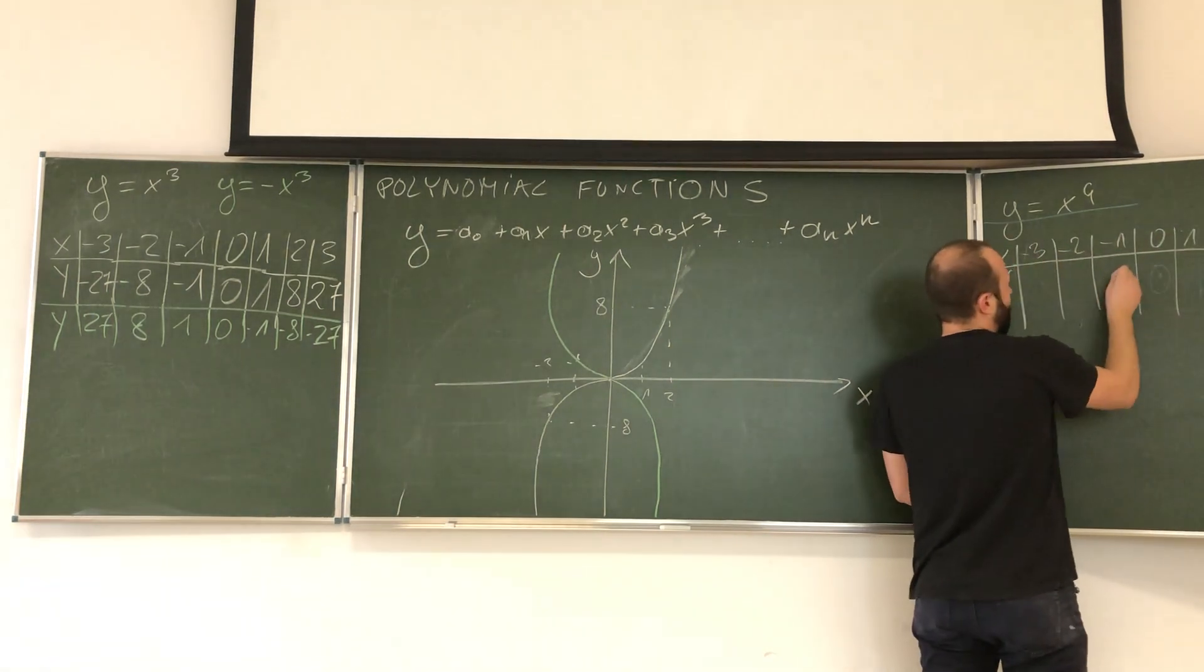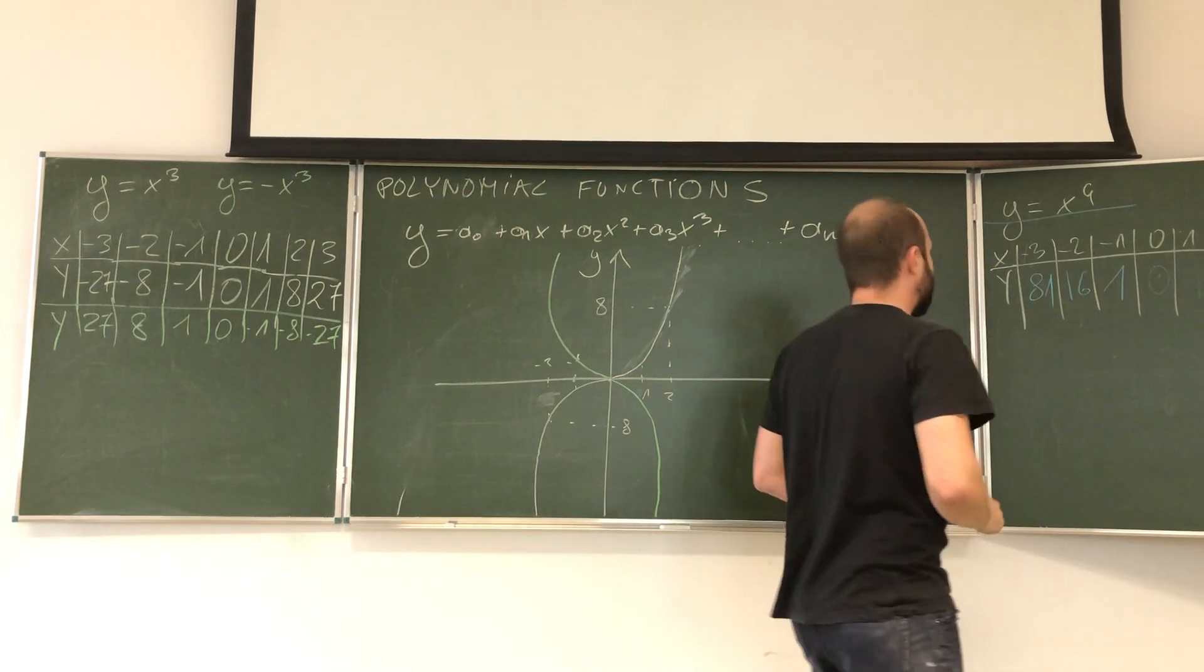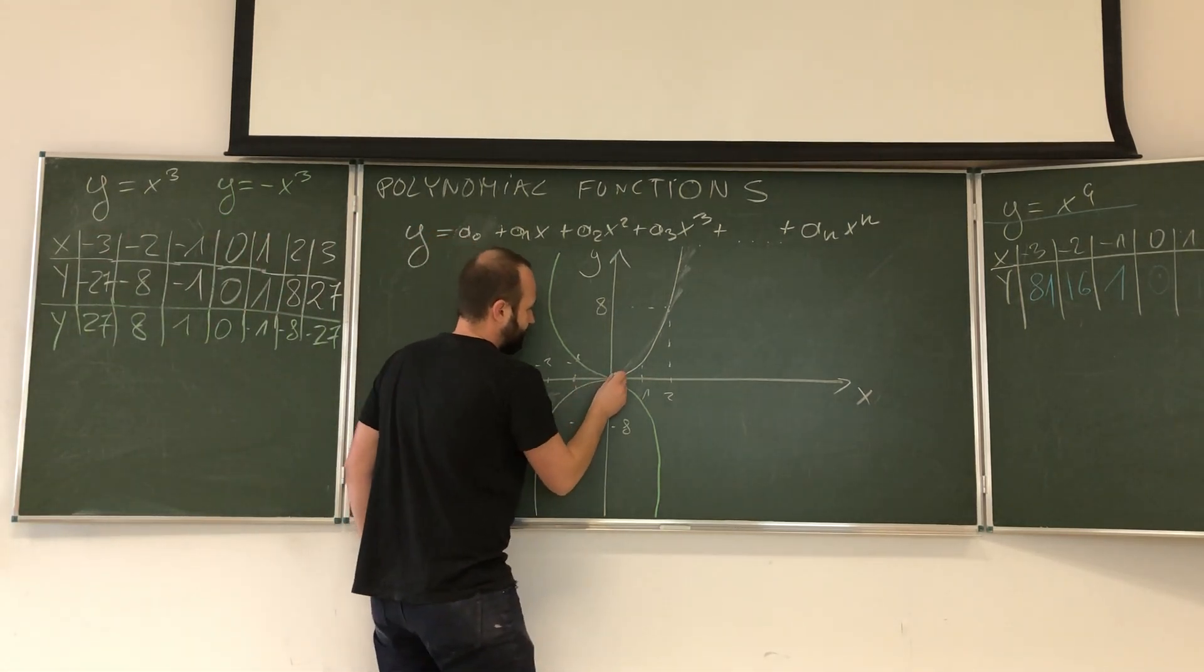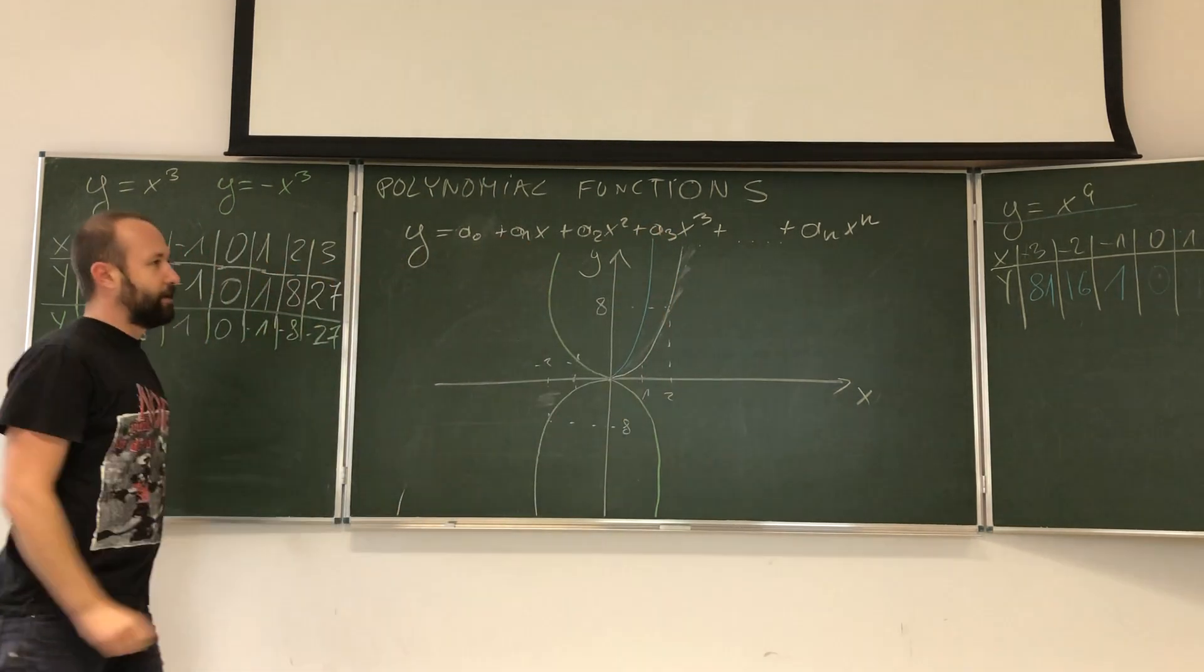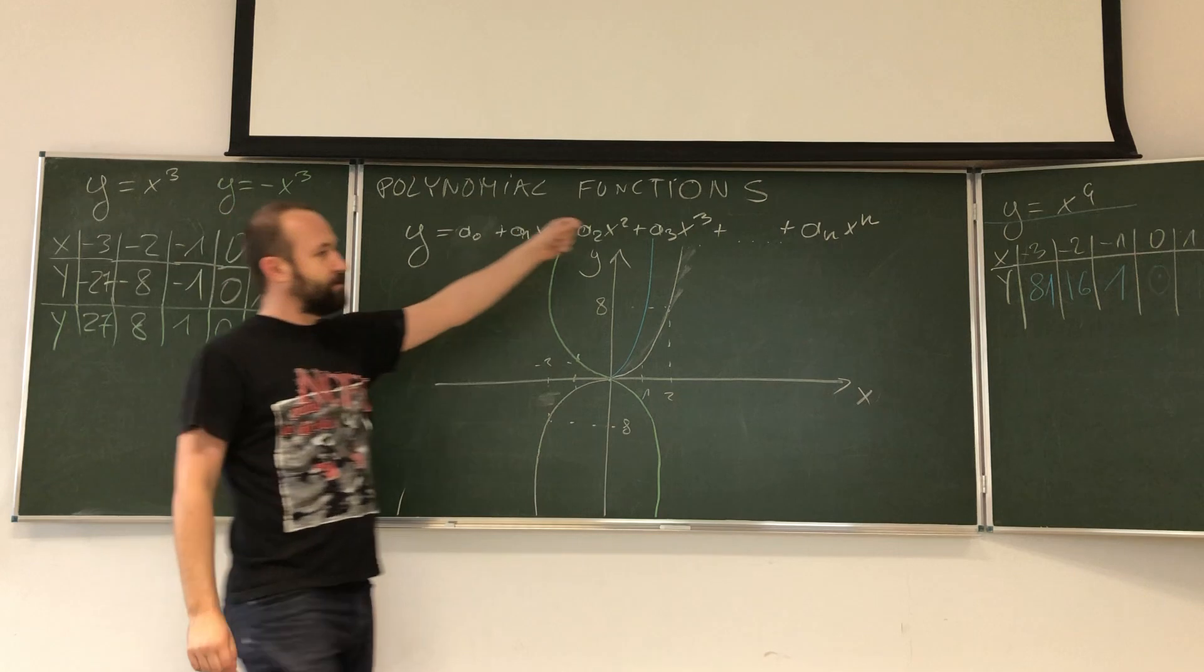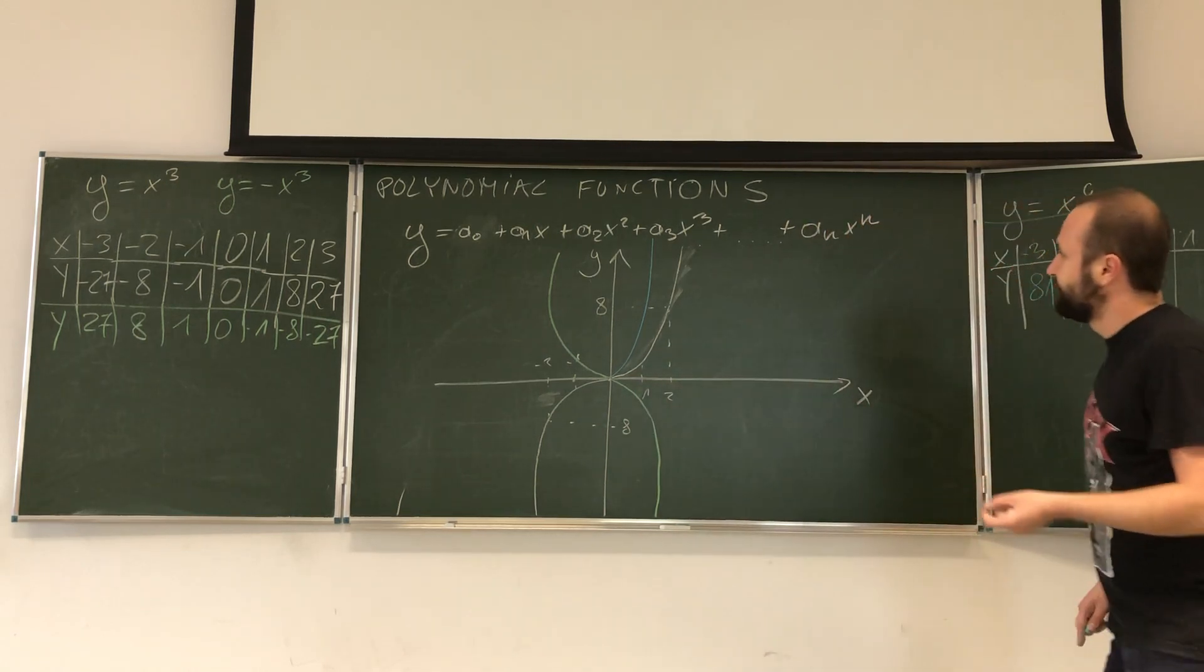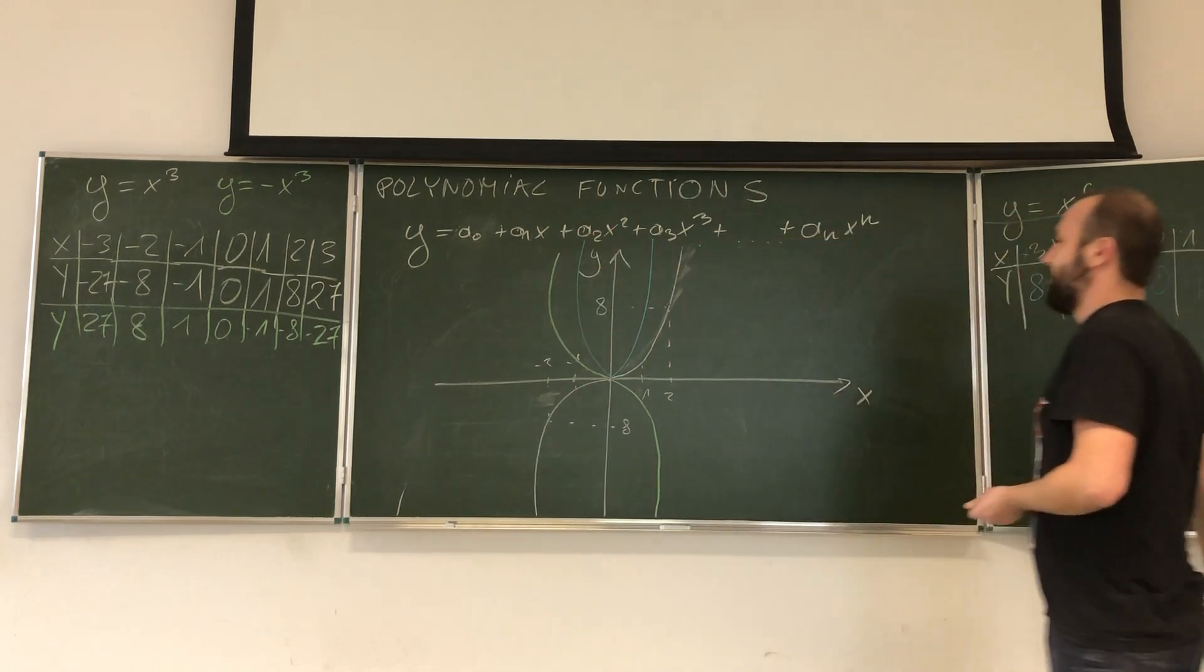Now over here we will have 1, 16, and 81. So look, what will happen to this function over here? Now two things are going to happen. First, in this part the function is getting steeper. Look, it grows even faster than this one. And also because we are raising to the power of 4, negative 1 times negative 1 is 1, times negative 1 is negative 1, times negative 1 is again 1. We will have a function like this.